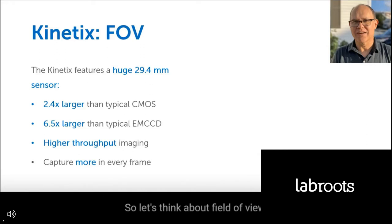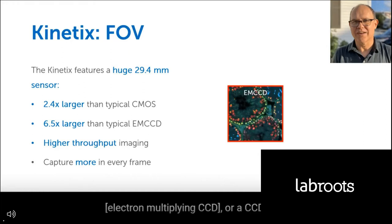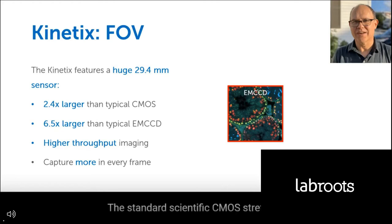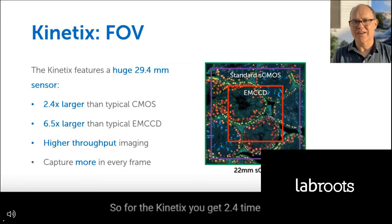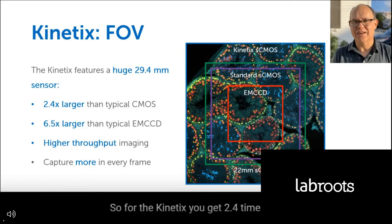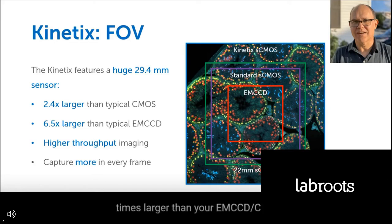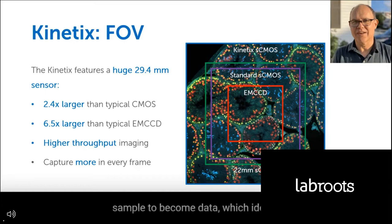The KinetX has a maximum quantum efficiency of around 95%, low noise, and can do 500 full frames per second readout of its 10-megapixel sensor. There's the full KinetX with a 29-millimeter field of view and the KinetX 22 with a reduced field of view. A classic EMCCD or CCD is around 11 millimeters; standard scientific CMOS stretches to about 18-19 millimeters. The KinetX stretches to 29 millimeters — giving 2.4 times the area of a typical CMOS, 2.4 times the information from your sample, and 6.5 times larger than your EMCCD.